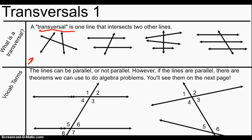Alright, so now that you've tried — here is a transversal. This line here is another transversal; it's cutting through or intersecting two other lines. This right here is also a transversal — this time it's cutting through three lines — and this right here is also a transversal. Transversals can cut through two lines, like this one, or they can cut through three or more lines, like over here.